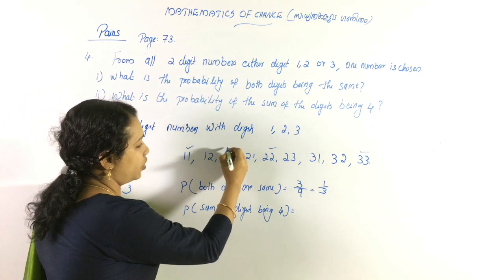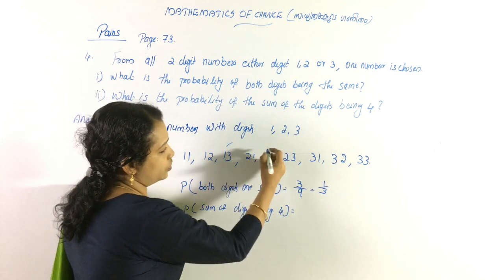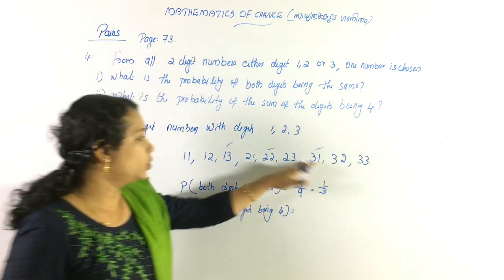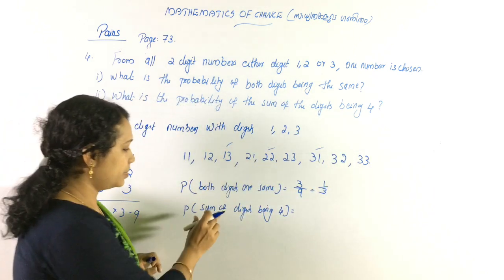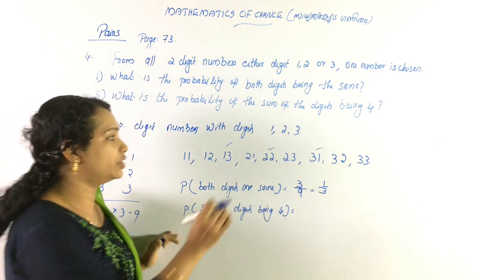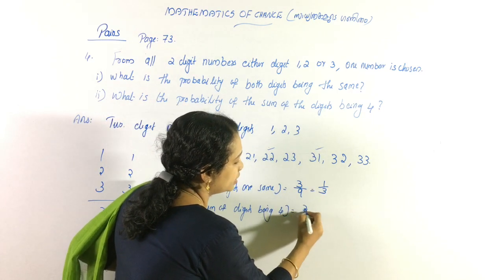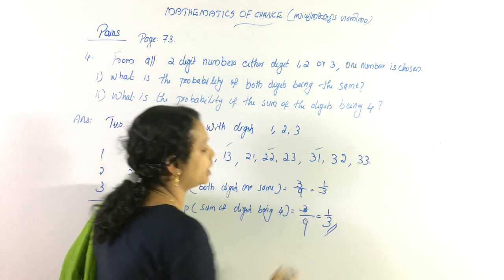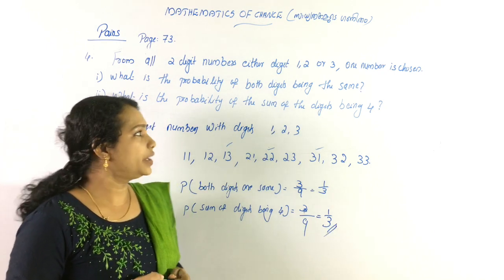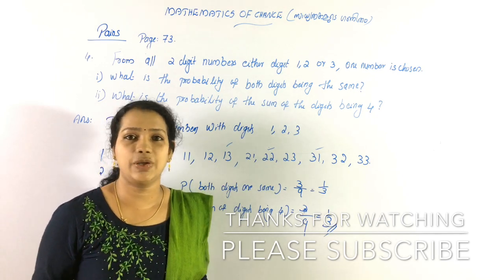Now, the probability that the sum of the digits is 4. The pairs with sum 4 are: 1+3=4 (giving 13), 2+2=4 (giving 22), and 3+1=4 (giving 31) — that is 3 possibilities out of 9. So the probability is 3 by 9, which is 1 by 3. We have covered 4 questions in this section. We will show you more in the next video. Thank you.